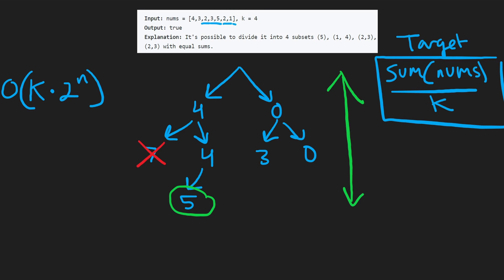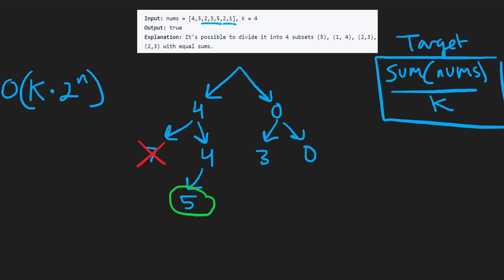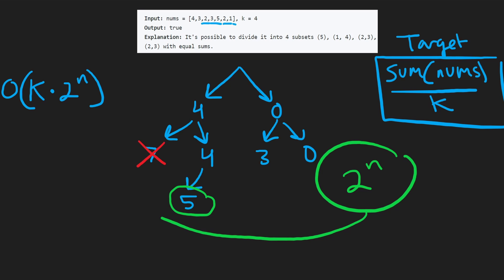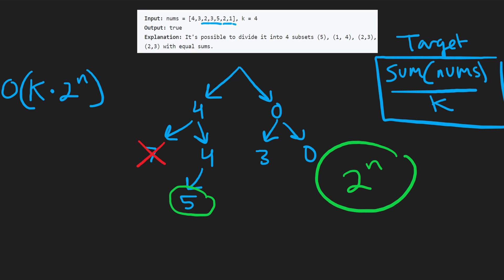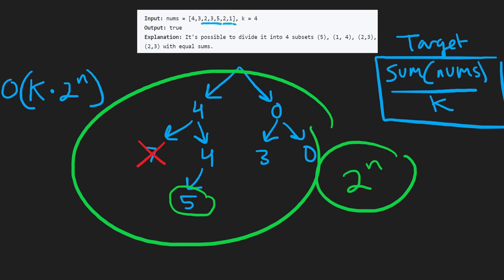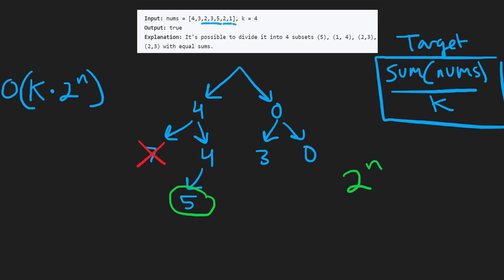How hard was it to find a single subset? The height of this tree could be n because we iterate through the entire list of nums, and the number of decisions we have is 2 — that's where the 2 to the power of n comes from. But remember, the time complexity of this solution is k times 2 to the power of n.